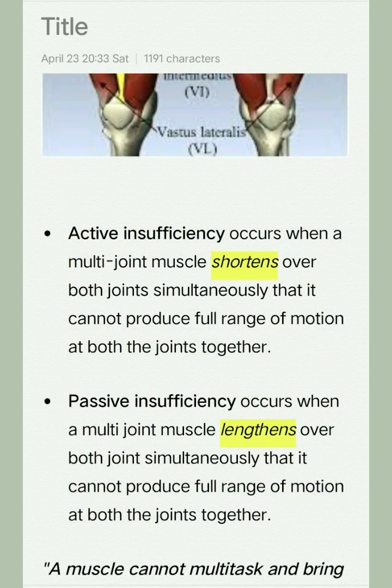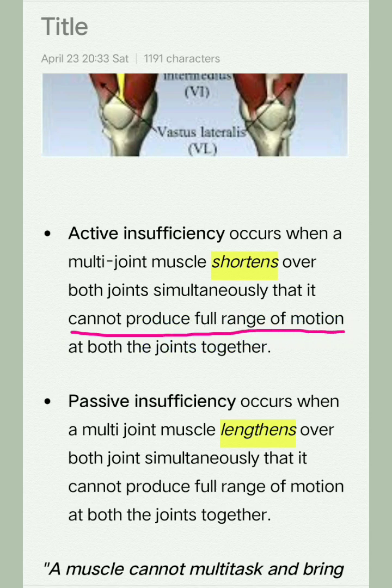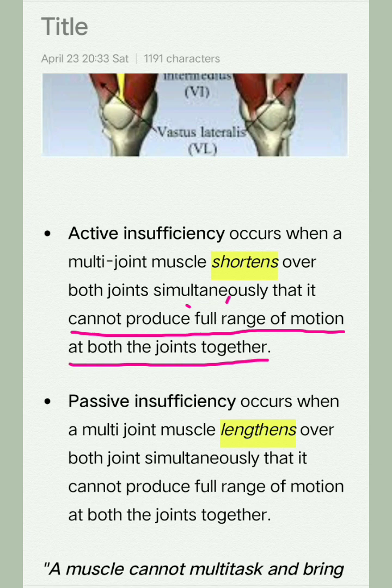Active insufficiency occurs when a multi-joint muscle shortens over both joints simultaneously such that it cannot produce full range of motion at both joints together. Concentrate on the word 'full' — it means the muscle can produce some range of motion at both joints, but not the full range at both joints simultaneously.